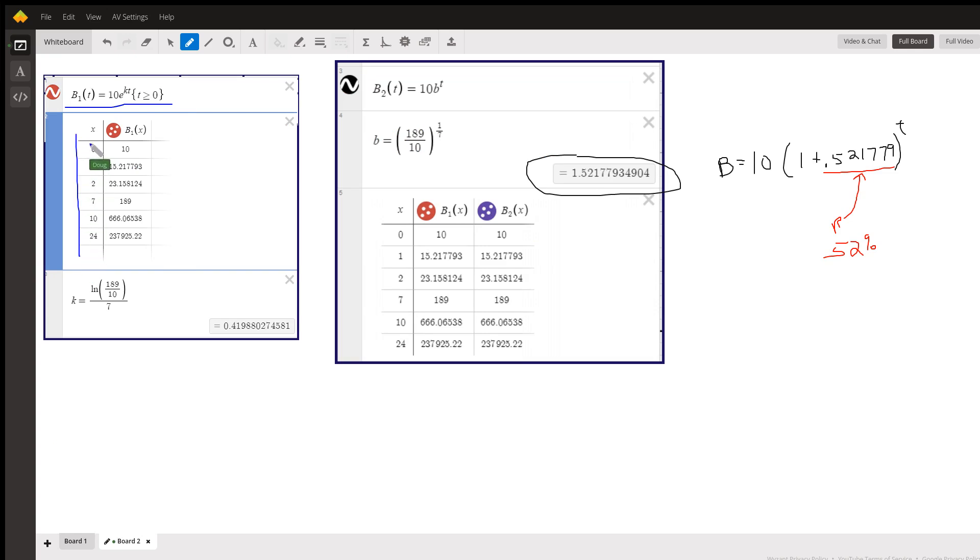Notice that when x is 0, the number of bacteria is 10. When x is 7, the number of bacteria is 189. After 24 hours, that's how many bacteria there are, 237,925.